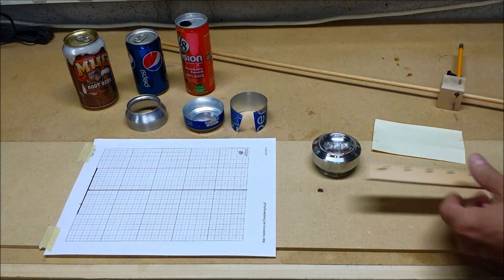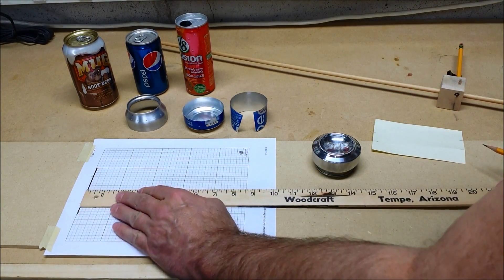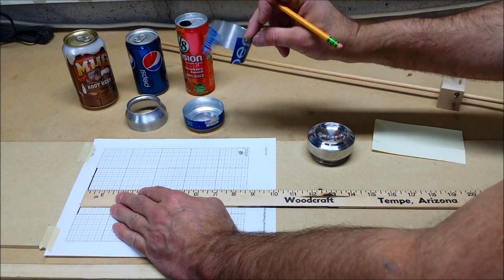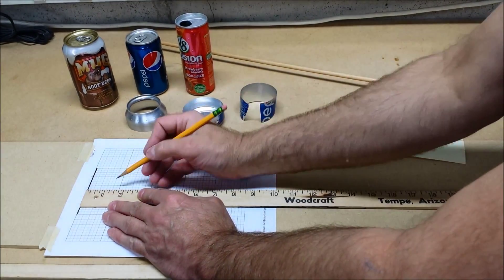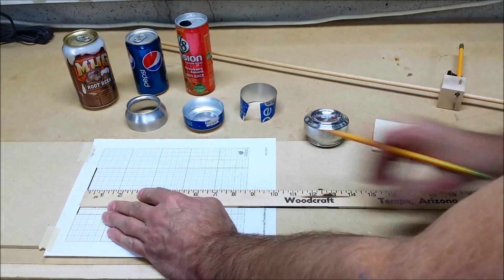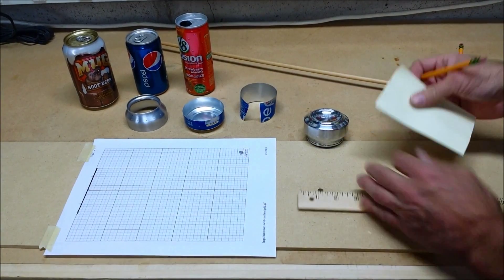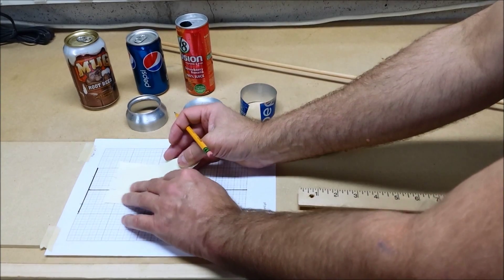Now I'm going to need to measure down an inch and a half because that's how tall the inner wall is. An inch and a half. And I'll plot those two points.